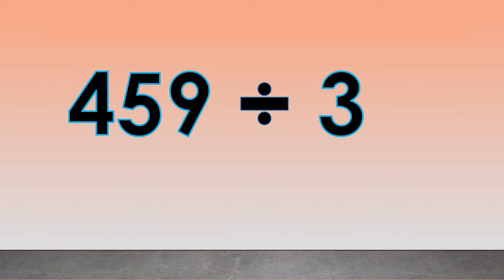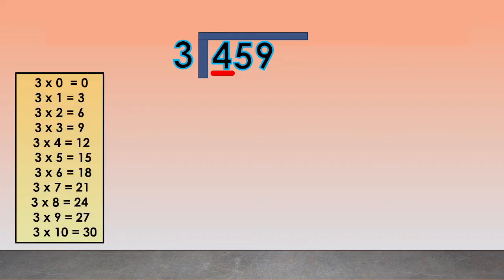Another example: 459 divided by 3. First, write the problem using a long division symbol. Next, take the first digit of the dividend, which is 4. How many 3s will it take to reach 4? We will recall the multiplication table of 3 and find the product equal to or nearest to 4. The nearest product is 3, so we will use 3 times 1 equals 3. We write 1 above the 4.